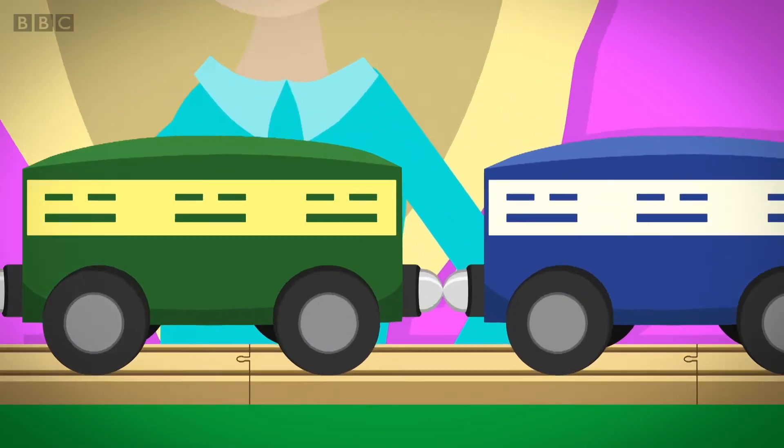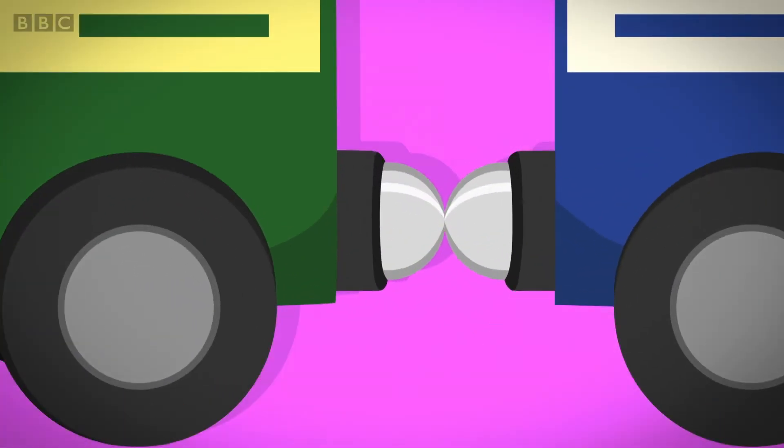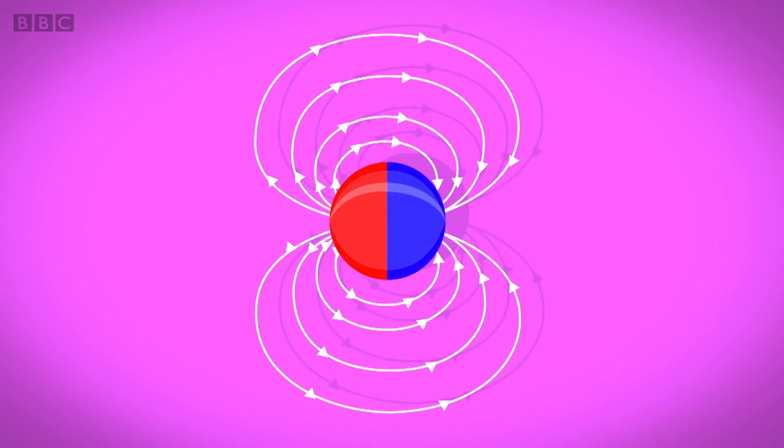On the end of each train carriage are magnets. They look the same but are actually different. Every magnet has two sides called poles. One side is called the North Pole and the other side is called the South Pole. And the whole magnet is surrounded by an invisible area called a magnetic field.